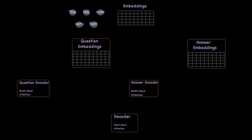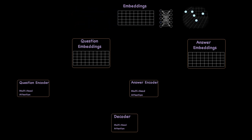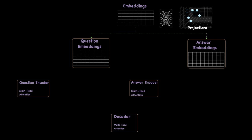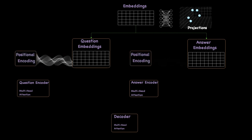Words are tokenized and assigned vectors stored in embeddings. Embeddings connect to linear layers, which are single-layer neural networks that project words. We have two types of embeddings: the question embedding and the answer embedding. We apply positional encoding to take into account positional information for each word.